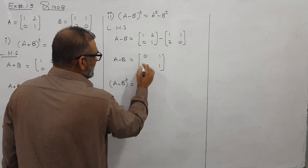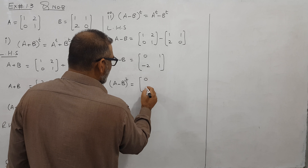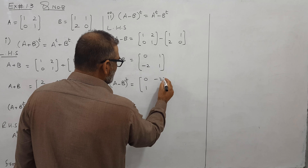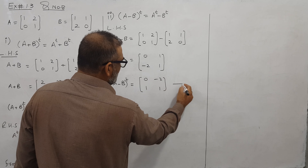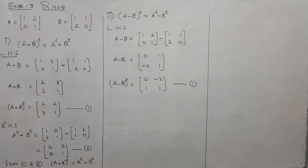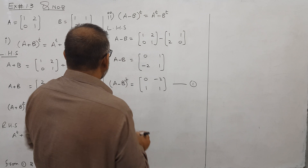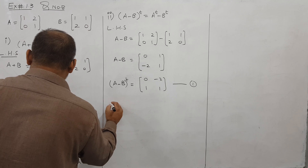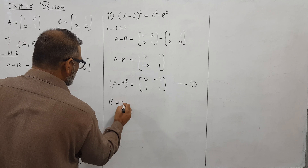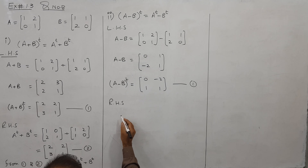یہ جو row ہے یہ پہلا column بن جائے گا اور second row جو ہے وہ second column بن جائے گا۔ اس کو بھی equation number 1 کہتے ہیں۔ ہماری left hand side ہو گئی۔ اب right hand side کرتے ہیں: right hand side پر A^T minus B^T ہے۔